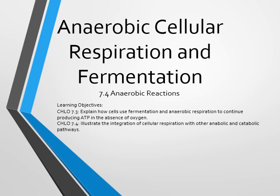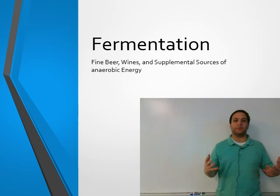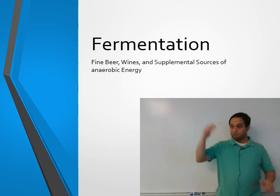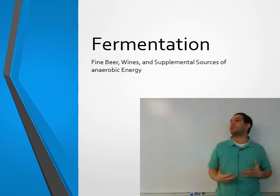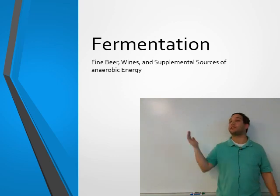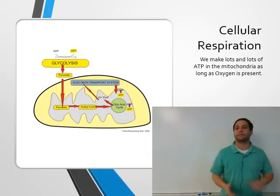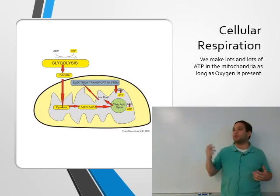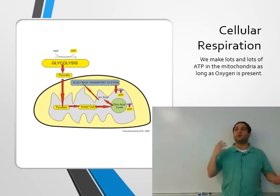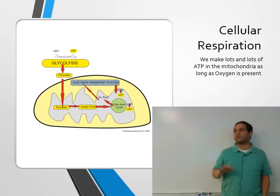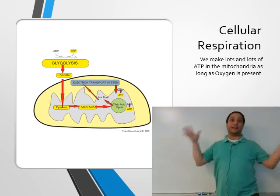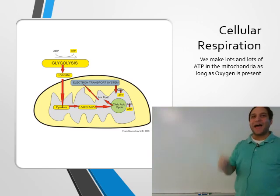We're going to start with fermentation. We've talked about aerobic reactions - they require oxygen. But you don't have oxygen in all cases. In cellular respiration, we took one molecule of glucose and produced a ton of ATP - roughly 30, 34, 36 sometimes. The big takeaway is a lot of ATP was made. But we absolutely needed oxygen.